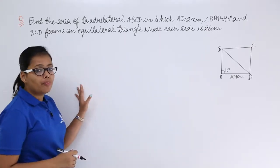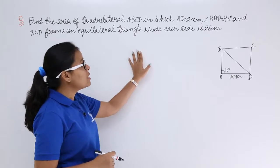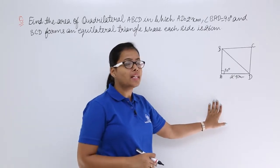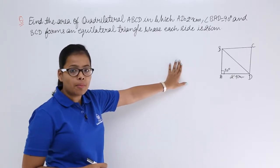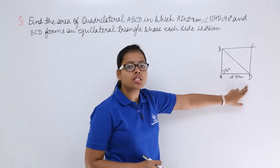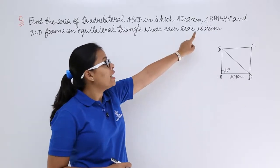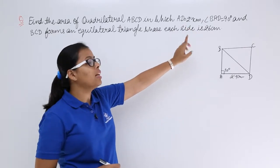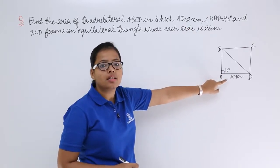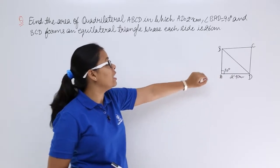find the area of a quadrilateral ABCD you can see this figure on your right hand side in which it has been given to you that the length of this side AD is equal to 24 cm and angle BAD where the angle included is A which means angle is subtended on A which is 90 degrees